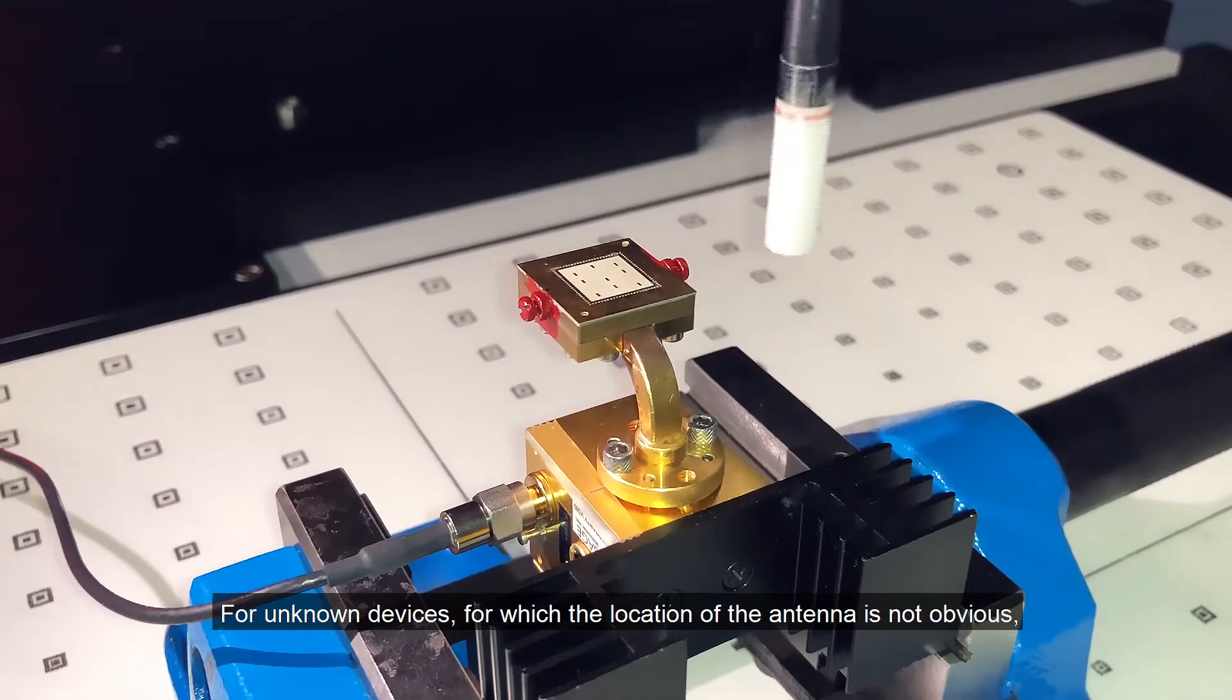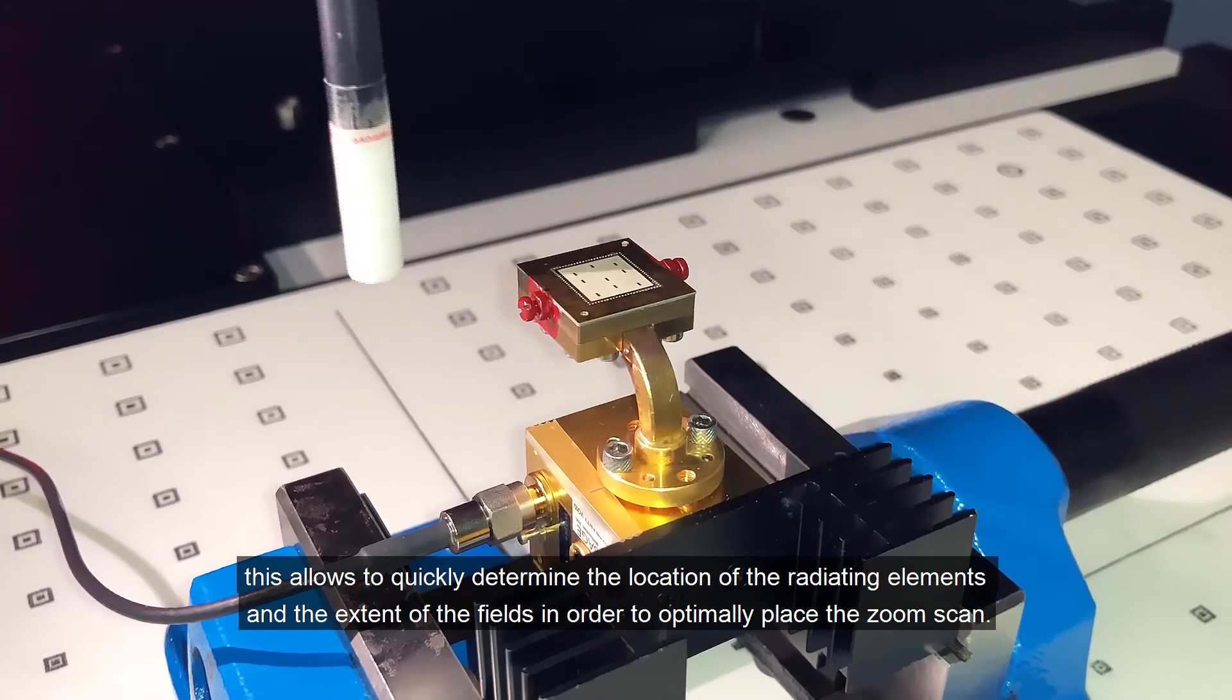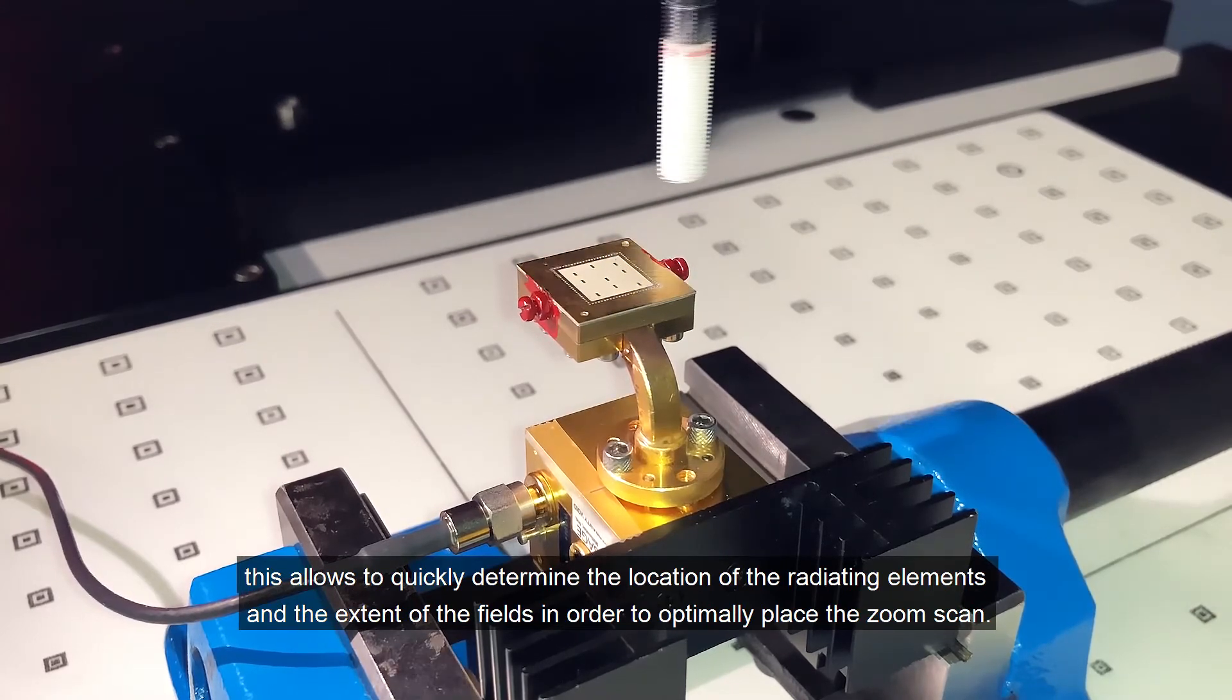For unknown devices for which the location of the antenna is not obvious, this allows to quickly determine the location of the radiating elements and the extent of the fields in order to optimally place the zoom scan.